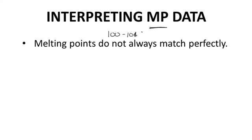RF values are recorded in an experimental section as RF — F is subscripted. The value is rounded to two decimal places, and the mobile phase composition follows in parentheses. While TLC is not great for identification, it is a very convenient method to quickly check the purity of a substance. More spots imply lower purity. If a substance shows just one spot by TLC, then that is evidence for purity.